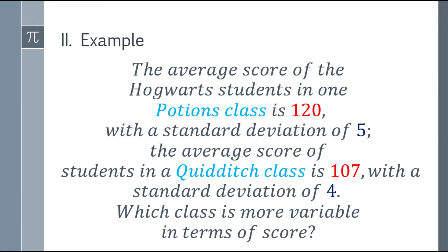So let's have an example. The average score of the Hogwarts students in one Potions class is 120 with a standard deviation of 5. The average score of students in a Quidditch class is 107 with a standard deviation of 4. Which class is more variable in terms of score?